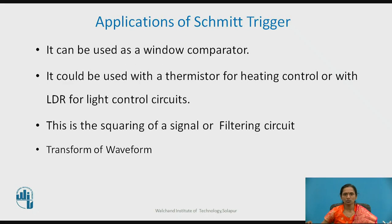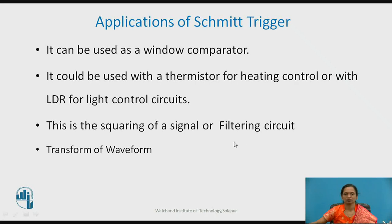The Schmitt trigger can be used as a window detector or comparator. It can also be used with a thermistor for heating control or to control light using an LDR. The Schmitt trigger converts any kind of input signal into a square wave, so it is also called a squarer or squaring circuit, and because it removes noise, it is also referred to as a filtering circuit. These are the main applications of the Schmitt trigger.